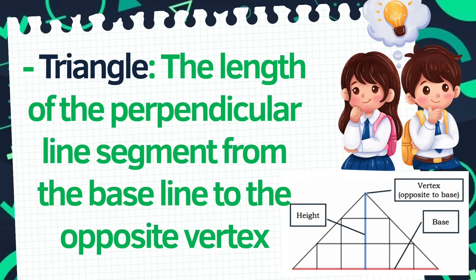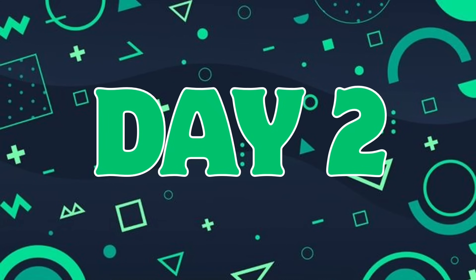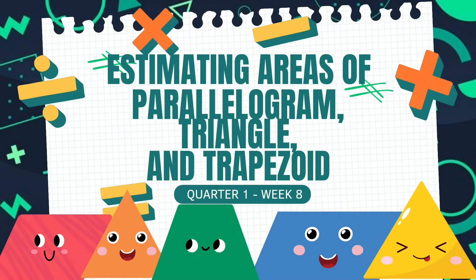For the triangle, the height is the length of the perpendicular line segment from the baseline to the opposite vertex. So for day two, we are now going to estimate the areas of the parallelogram, triangle, and trapezoid.